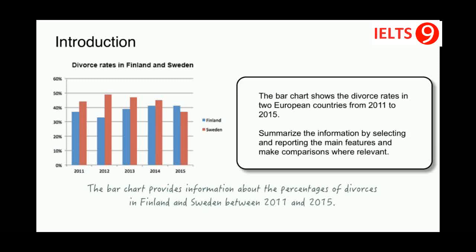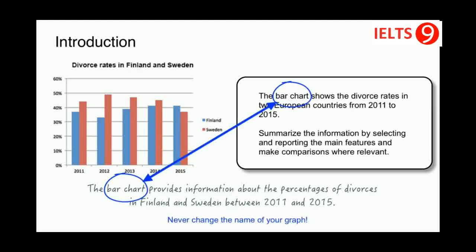Here is how I wrote it: 'The bar chart provides information about the percentages of divorces in Finland and Sweden between 2011 and 2015.' Notice that I did not change the name of the chart — you should never change the name of your graph. Remember, table is a table, bar chart is a bar chart, and line graph is a line graph.